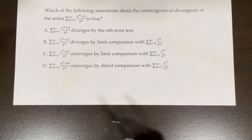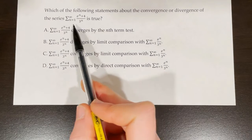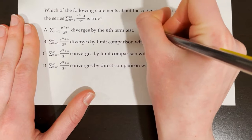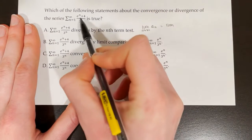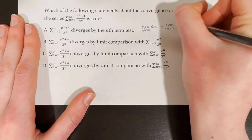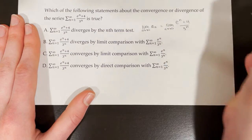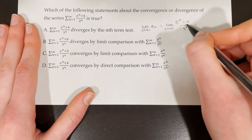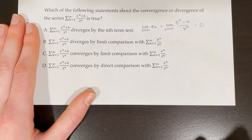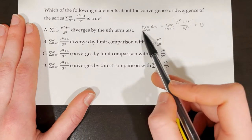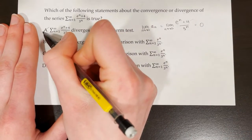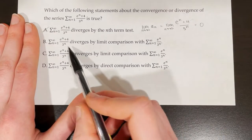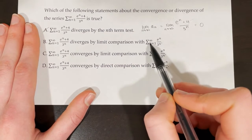Which statement is true about the convergence of eⁿ⁺⁴ over 3ⁿ? Choice A says it diverges by the nth term test. Taking the limit as n approaches infinity of eⁿ⁺⁴ over 3ⁿ: the plus 4 is inconsequential, leaving eⁿ over 3ⁿ. Since 3 is bigger than e, the denominator grows faster — small over large approaches 0. Since the limit equals 0, we cannot conclude divergence by the nth term test. So choice A is incorrect, though the series could still diverge.